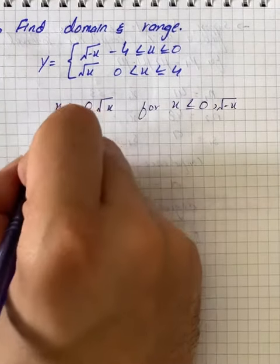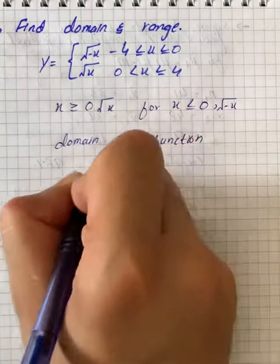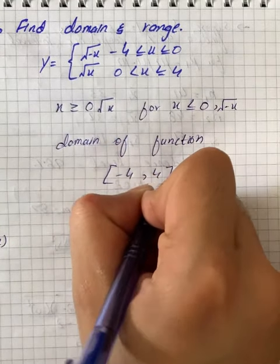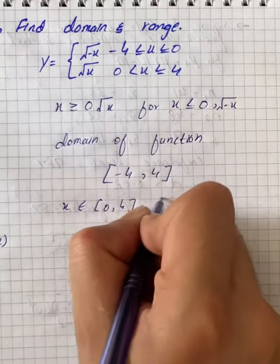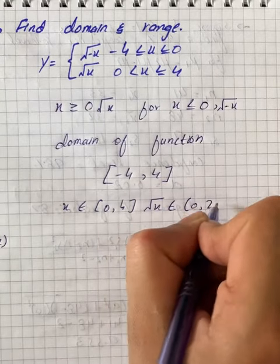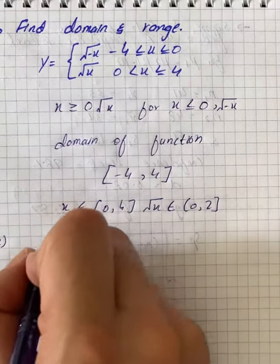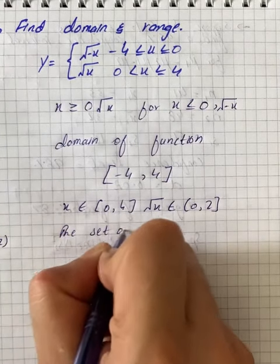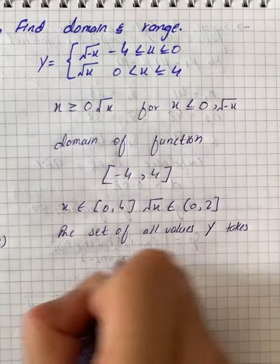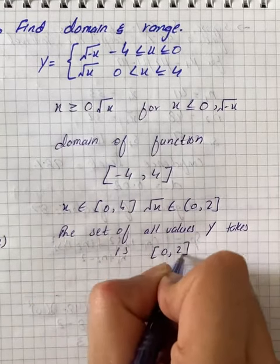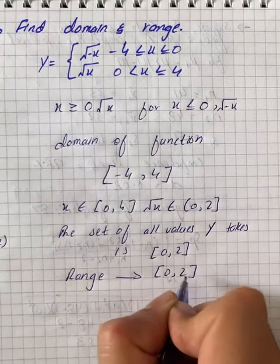The domain of the function is [-4, 4]. When x is equal to 0 and 4, under root x approaches 0 and 2. So the set of all values y takes is [0, 2], meaning the range is [0, 2].